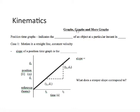A position-time graph. What does a position-time graph indicate? It indicates the position of an object at a particular instant in time.